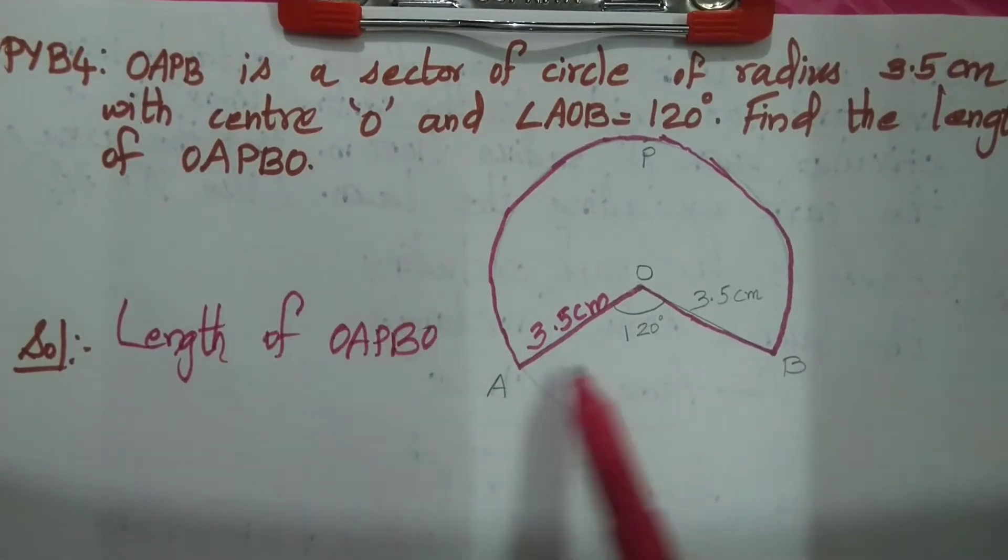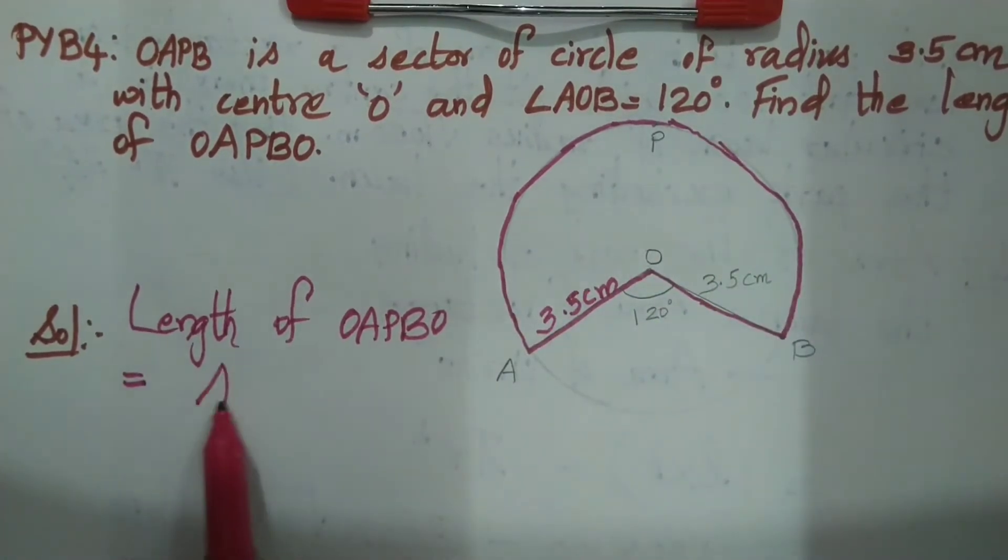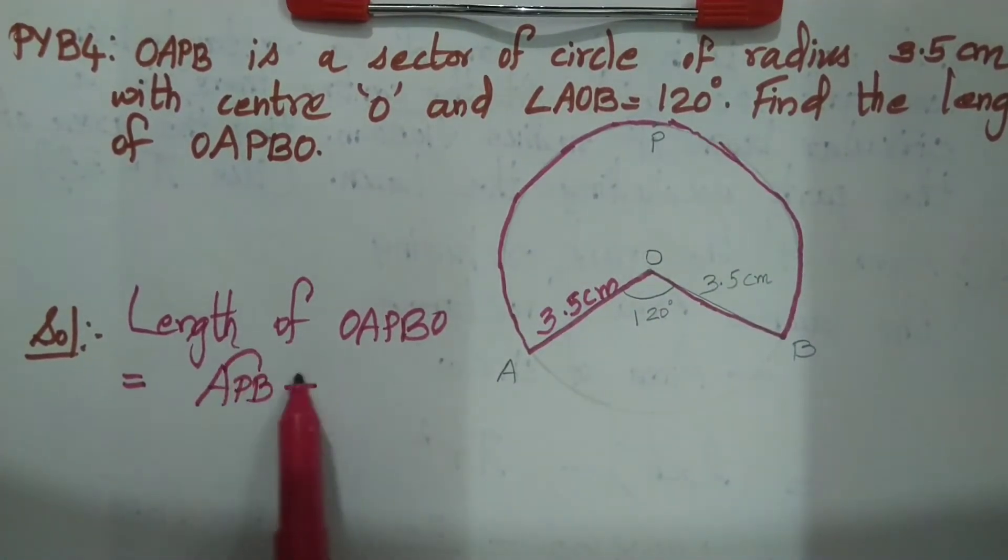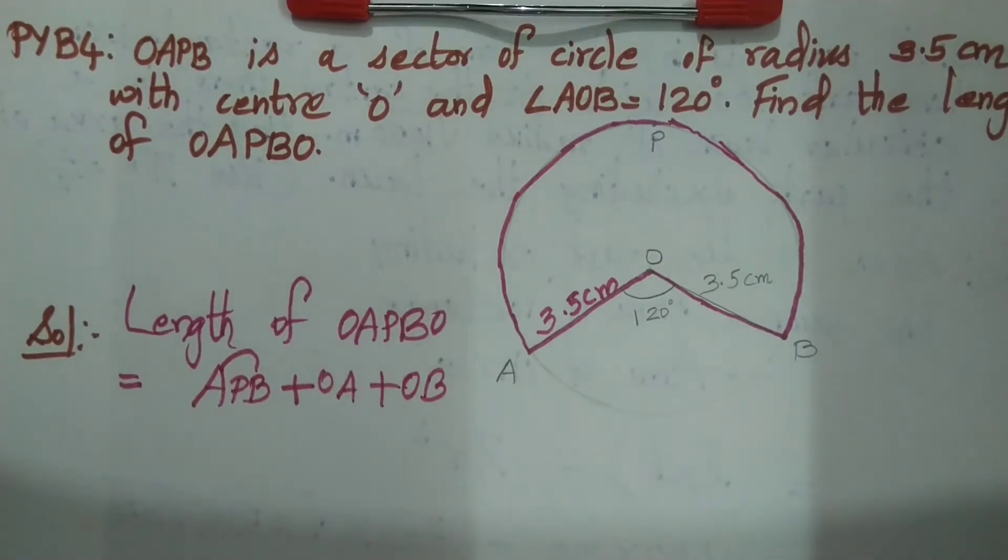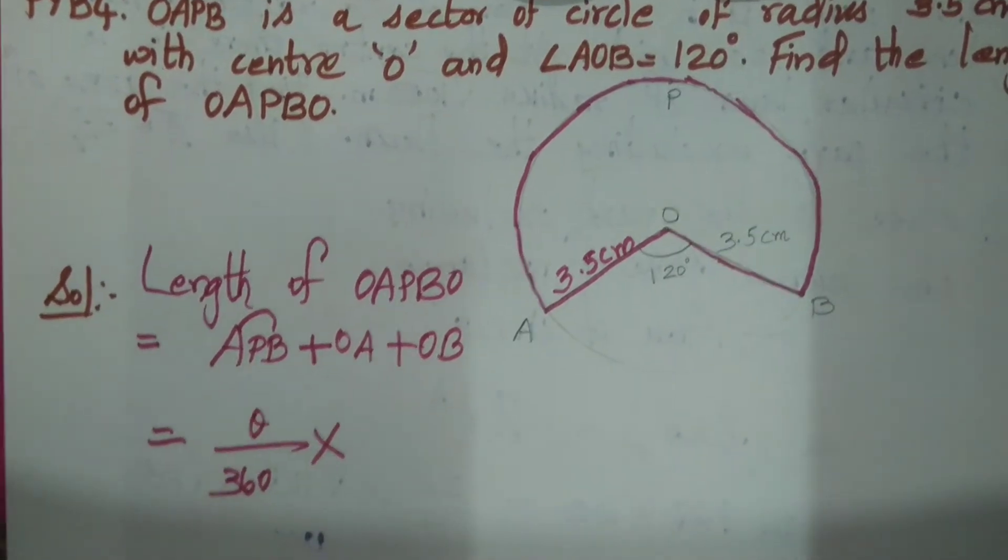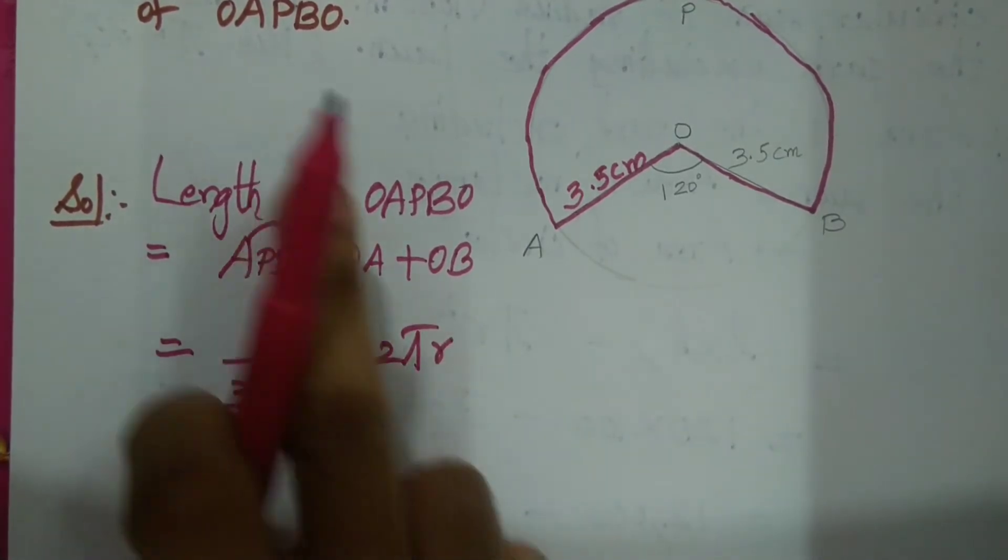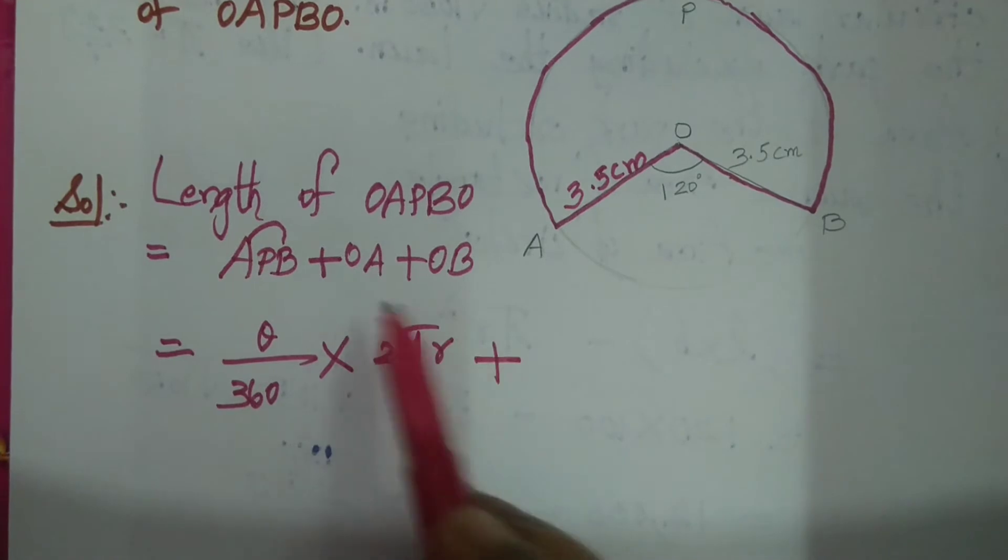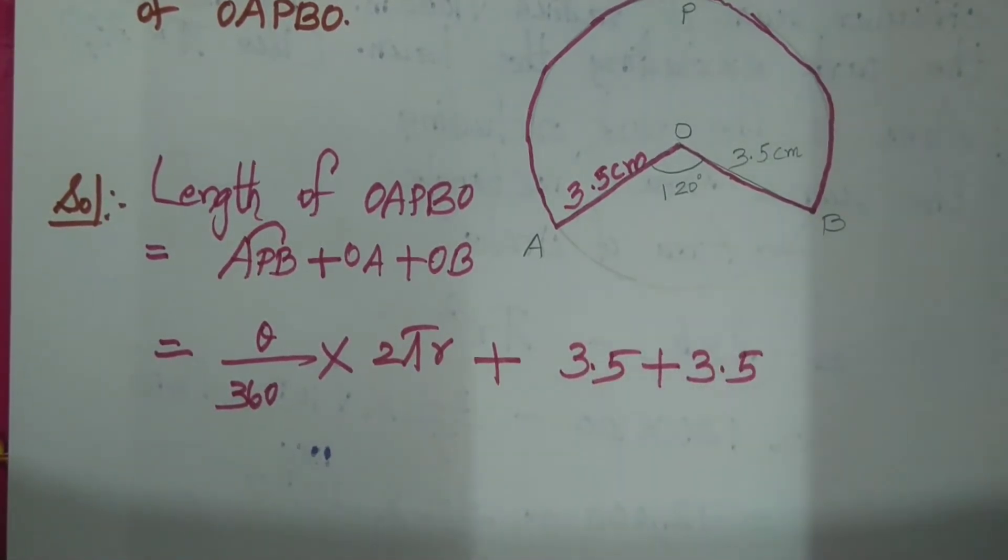Length of OAPBO. OAPB. APB, theta by 360 into 2 pi r. Pi square is area. Length of the arc, OAPB plus OA plus OB. Because the radius OA and OB is 3.5.